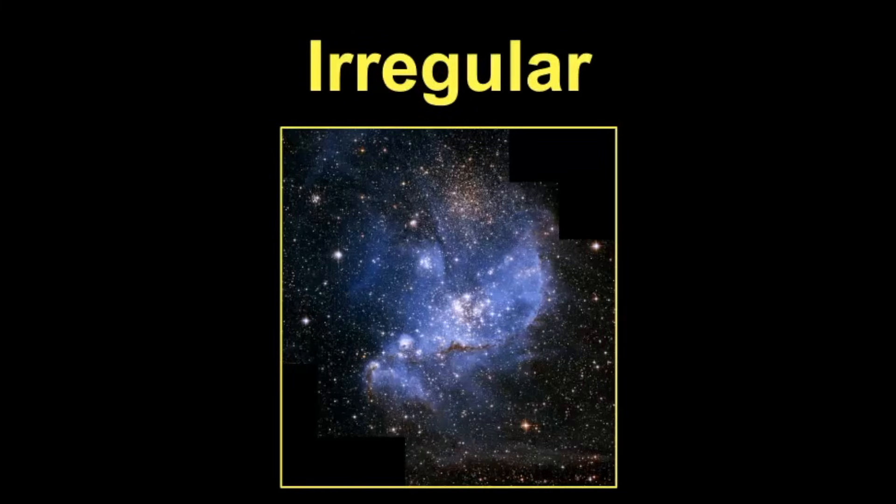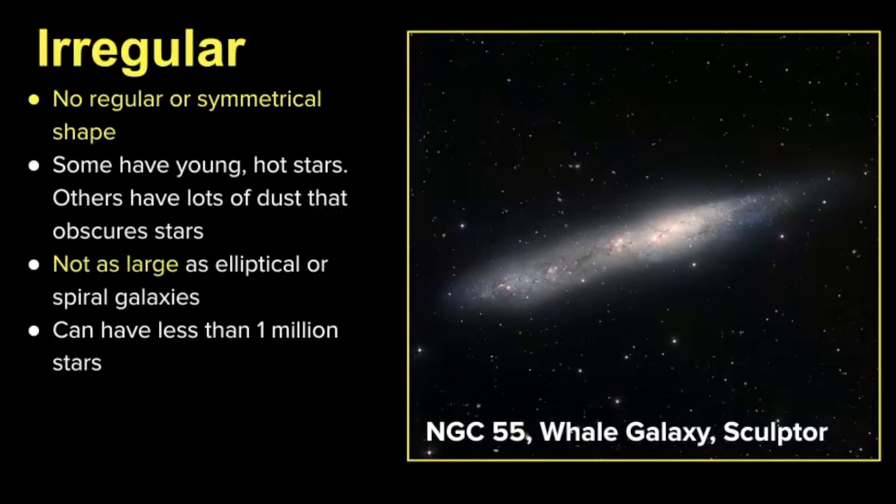Our next classification of galaxies falls with irregular galaxies. As you can probably figure out from its name, they have no particular shape or symmetry. They're often small in size and have younger, hotter stars. Typically they have less than a million stars, but they're very common in our universe.